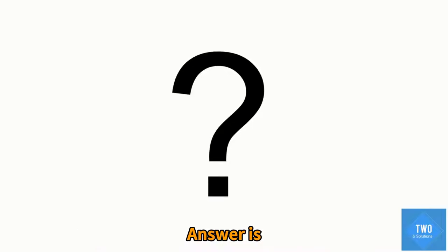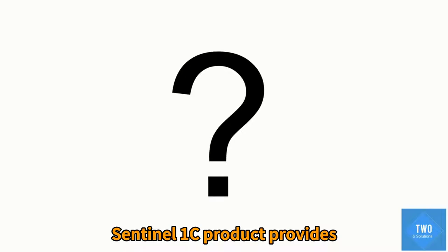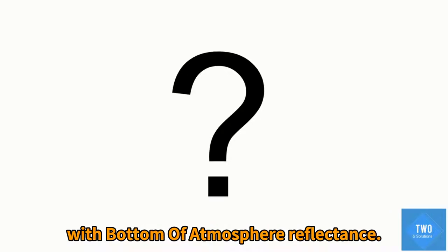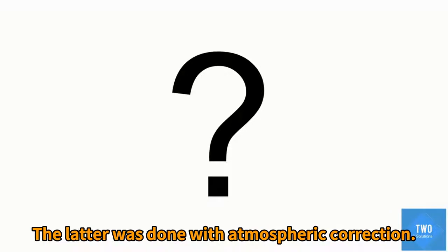The answer is: the Sentinel-2-1C product provides top-of-atmosphere reflectance, while the Sentinel-2-2C product provides bottom-of-atmosphere reflectance — the latter achieved through atmospheric correction.